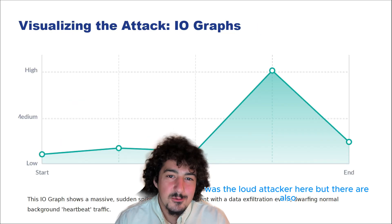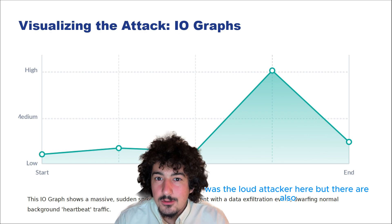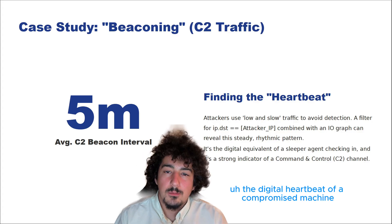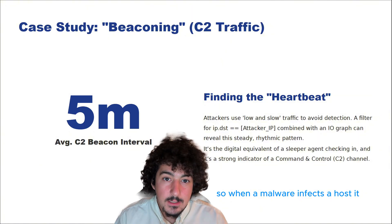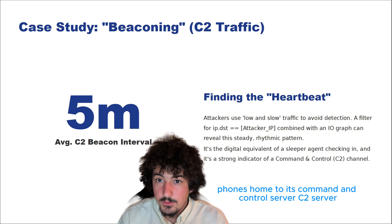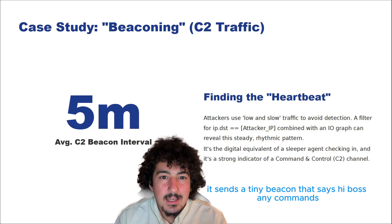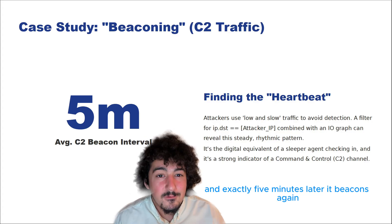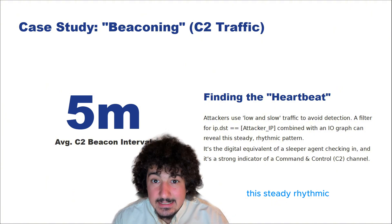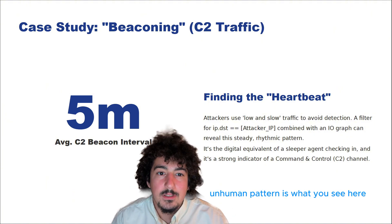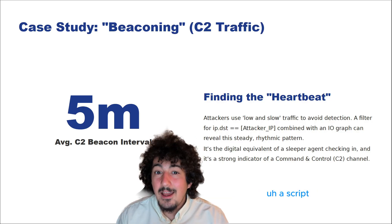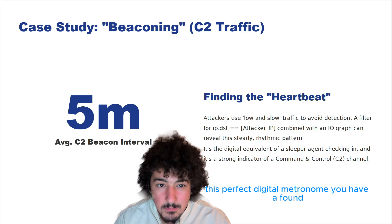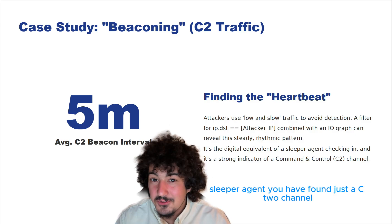The previous slide was the loud attacker. But smart attackers are slow and low. This is beaconing — the digital heartbeat of a compromised machine. When malware infects a host, it phones home to its command and control, or C2, server. It sends a tiny beacon that says 'hi boss, any commands?' And the C2 says 'nope, check back in five minutes.' Exactly five minutes later, it beacons again. This steady, rhythmic, unhuman pattern is what you see. Humans aren't precise — a script is. When you find this perfect digital metronome, you have found a sleeper agent. You have found a C2 channel.